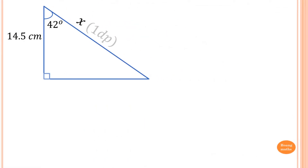Now find the value of X correct to one decimal place. Angle 42 degrees is given, so we refer to this angle. 14.5 is given, which is adjacent to the angle, so we label it A. And X is the hypotenuse because it's opposite the right angle — always the longer side. So we label it H.